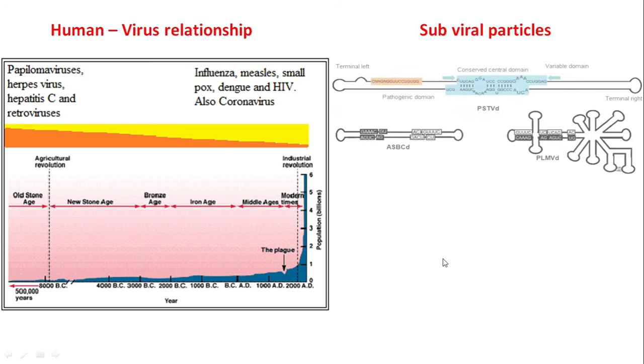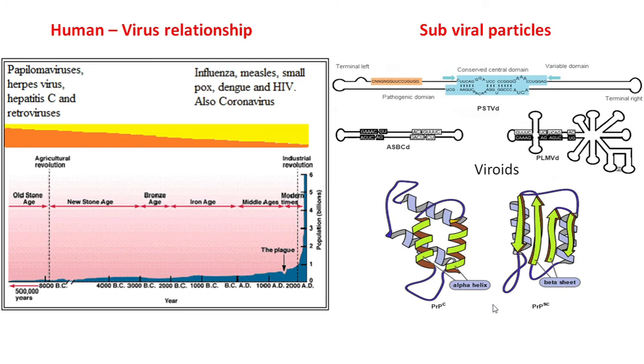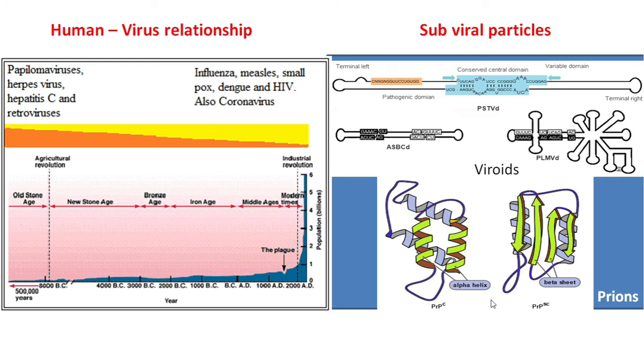There are particles even smaller than viruses. Viruses are made of nucleic acids and proteins, so they are basically nucleocapsids, but sometimes they are surrounded by a lipid bilayer envelope, like coronavirus. There are smaller particles called viroids, which are made only of RNA, and they usually infect plants. There are proteinaceous infectious particles called prions, made only of proteins. Prions cause diseases like kuru disease, mad cow disease, bovine spongiform encephalopathy, and transmissible spongiform encephalopathy. These are very dangerous diseases.